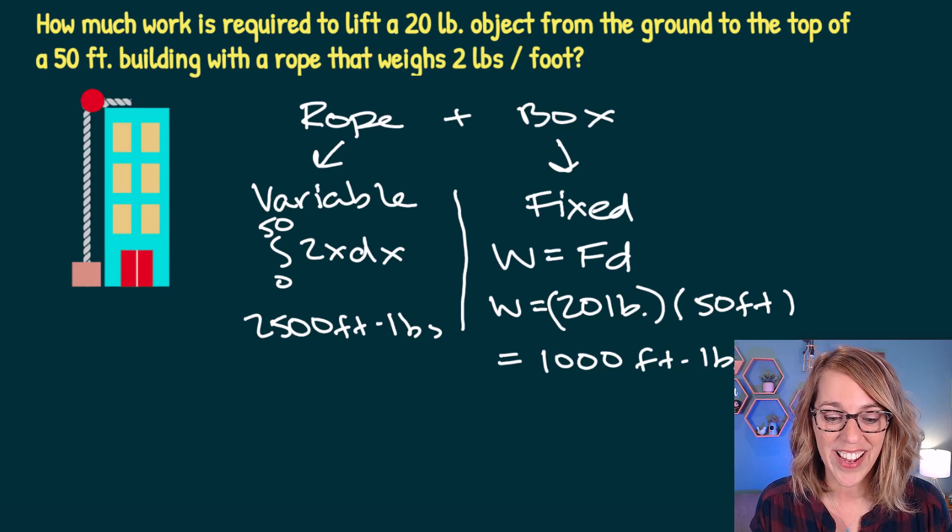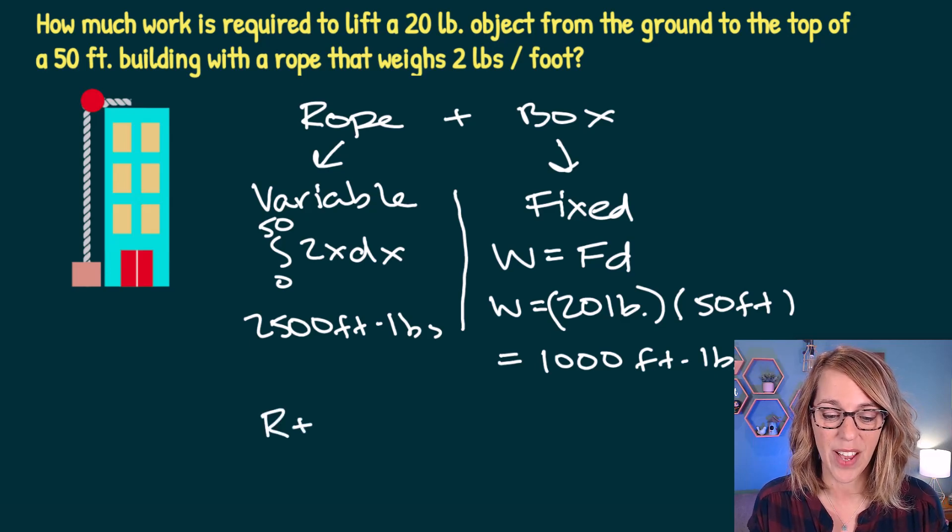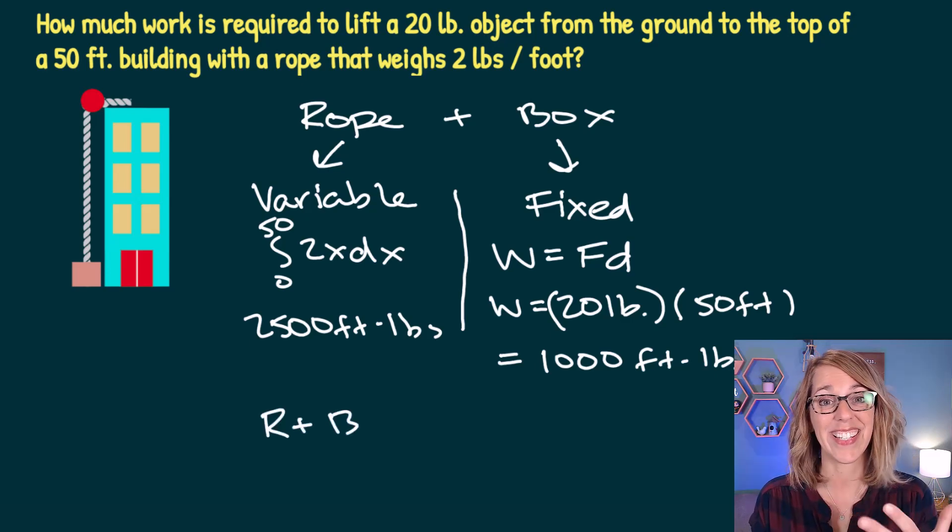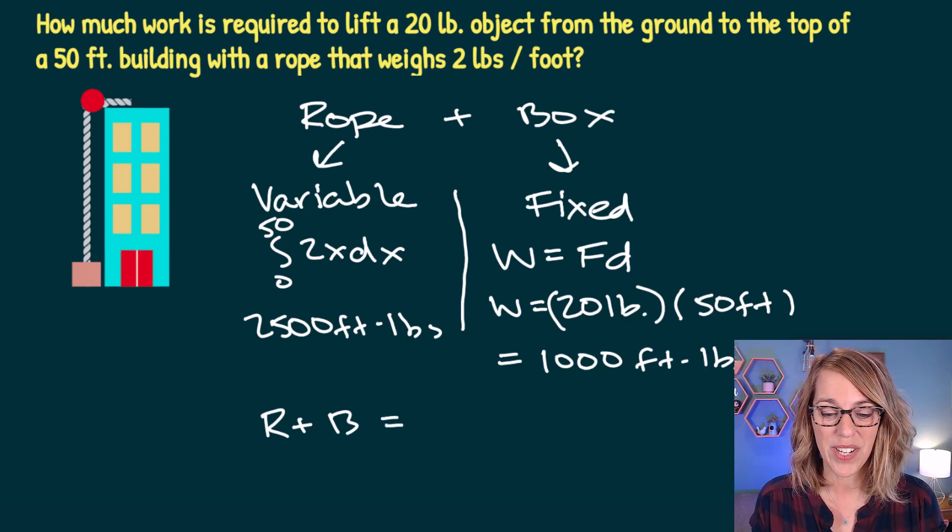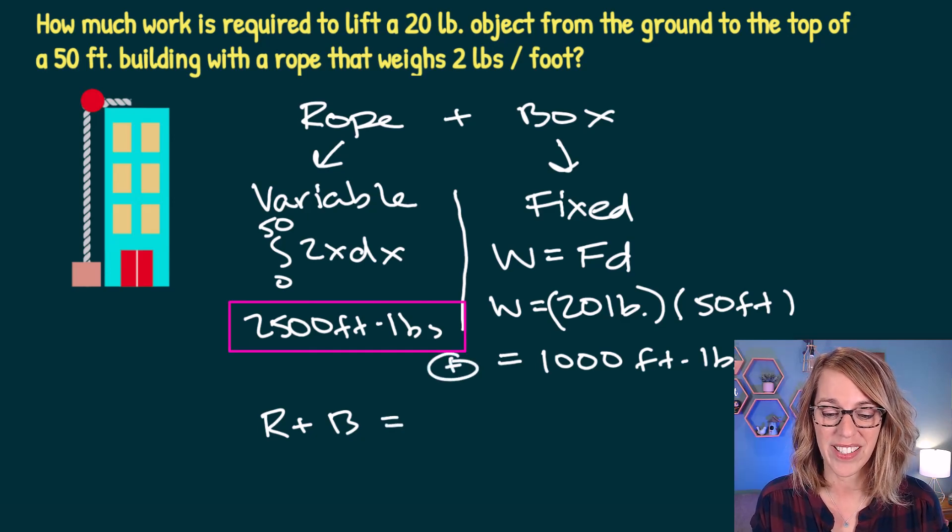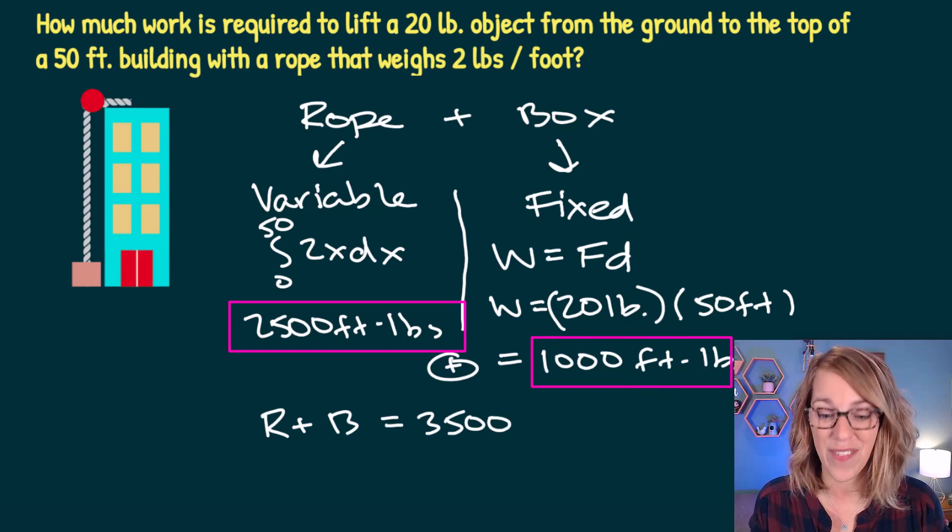The total work done then is the work needed to lift that rope plus the work needed to lift that box, which is going to be that 2,500 plus 1,000, and we're going to get our 3,500 foot-pounds.